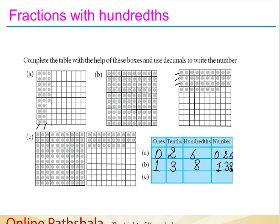You can understand this in one more way. The whole square represents one. As there are two squares and one is completely filled with dots, we write one. In the next square, three parts of ten are completely filled with dots, so three comes in the tenths place. Counting the remaining dots: one, two, three, four, five, six, seven, eight — eight parts of a hundred. If two more were there it would be four parts of ten, but here it is eight parts of a hundred, so we represent this as eight in the hundredths place.